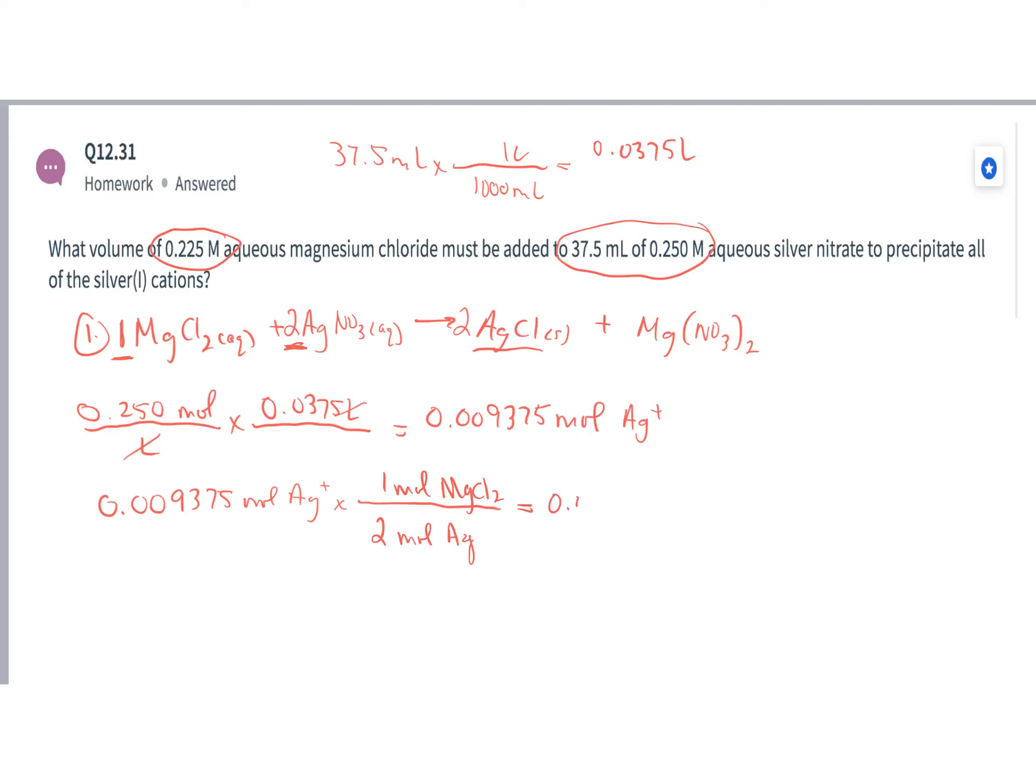So that means I'm going to need 0.004688 moles of magnesium chloride I'm going to have to add to this solution. I know molarity is moles per liter.